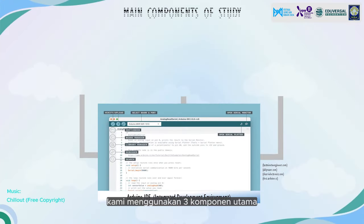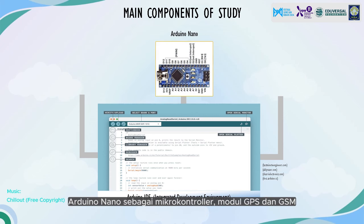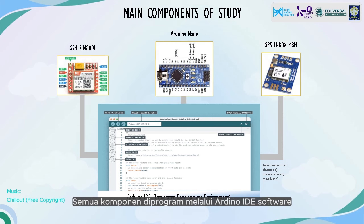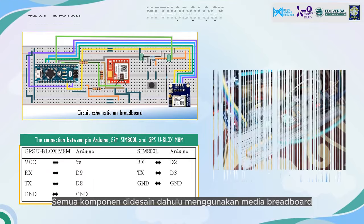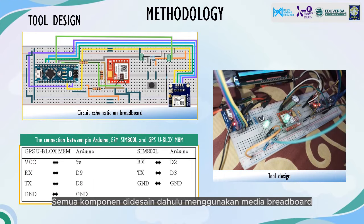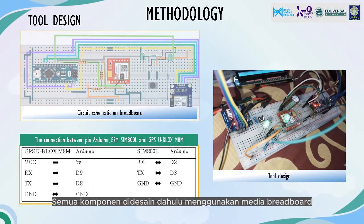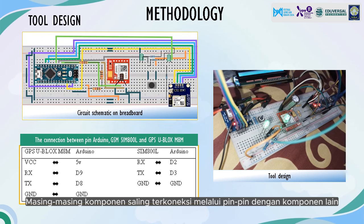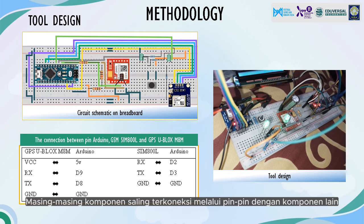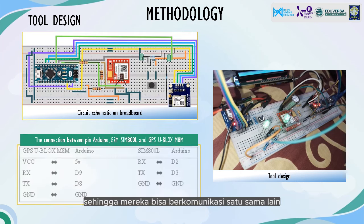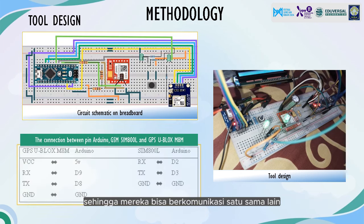We use three main components: Arduino Nano as the microcontroller, GPS module, and GSM module. All components were programmed using Arduino IDE software and were designed in advance using circuit design software. Each component is connected through pins so they can communicate with each other.